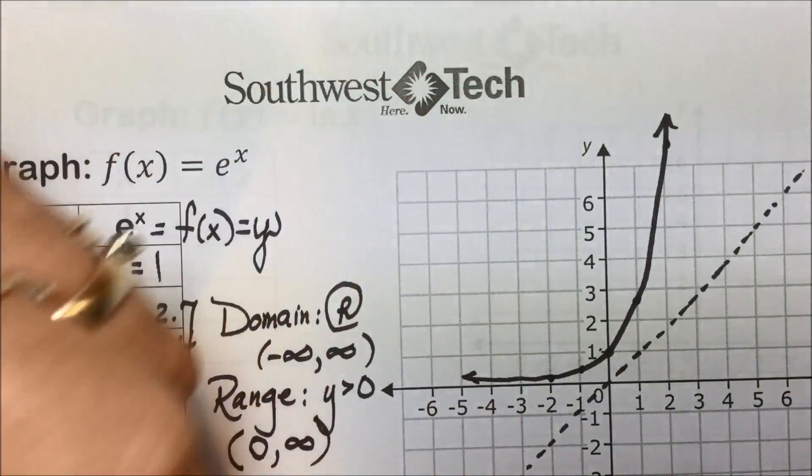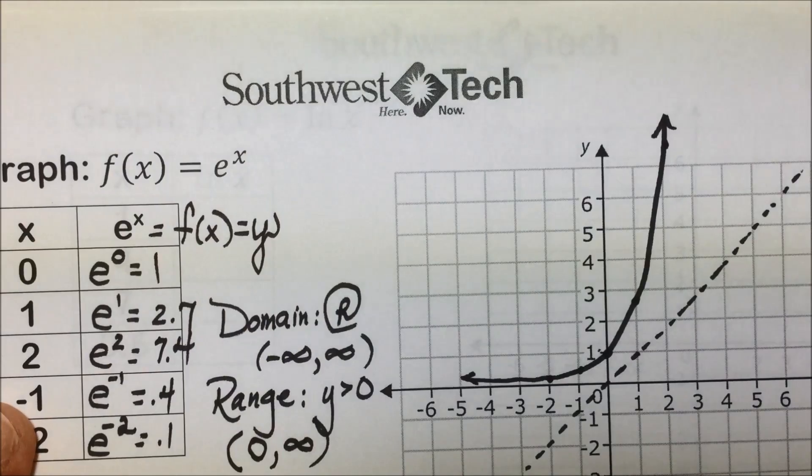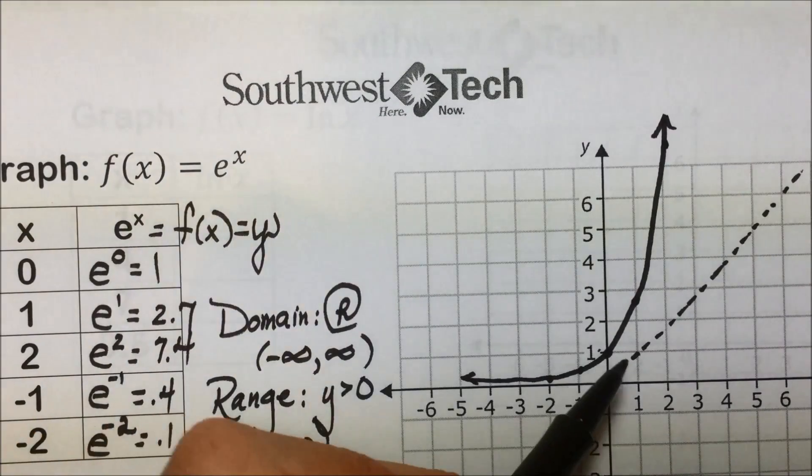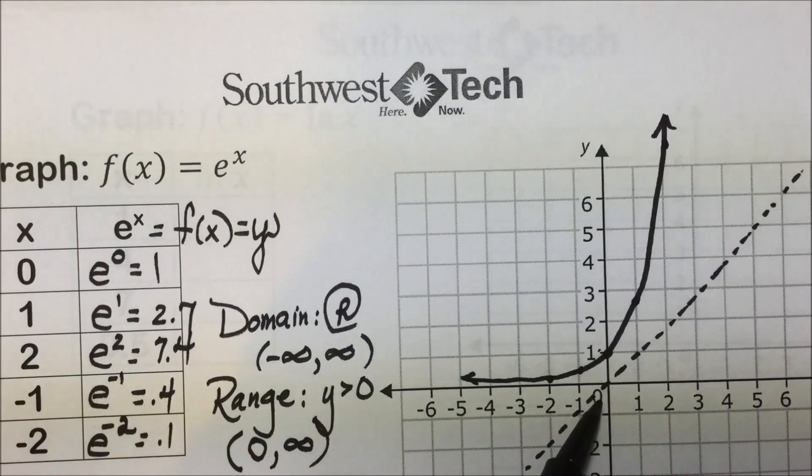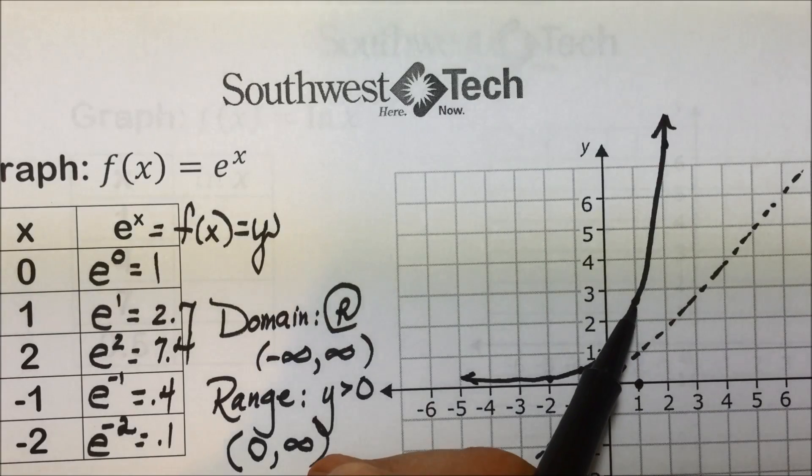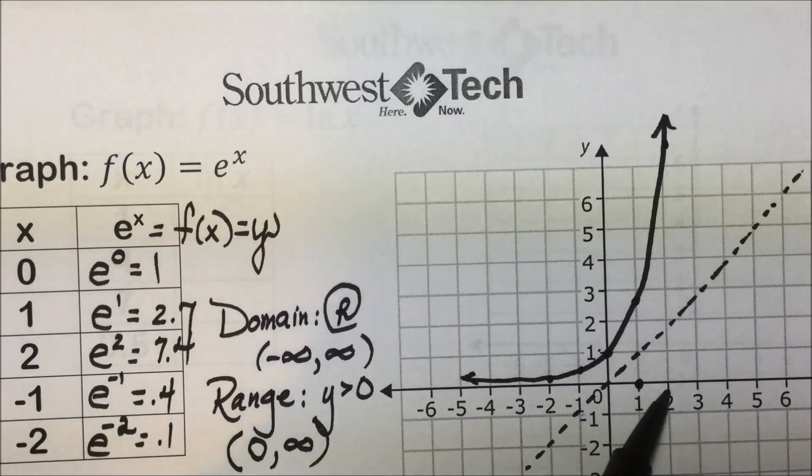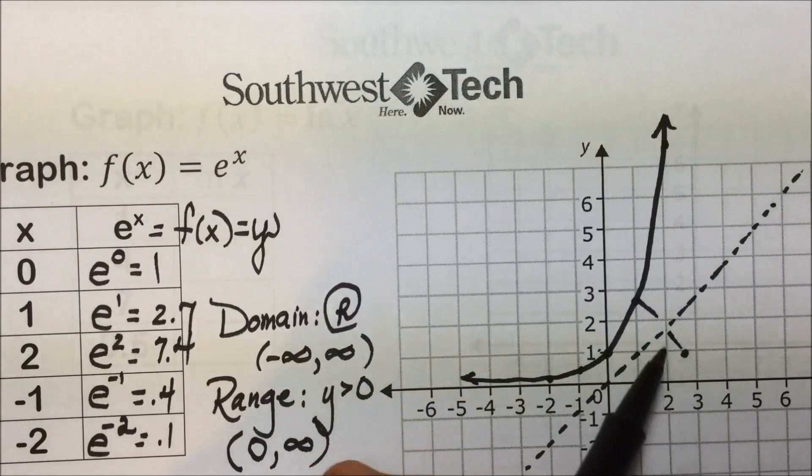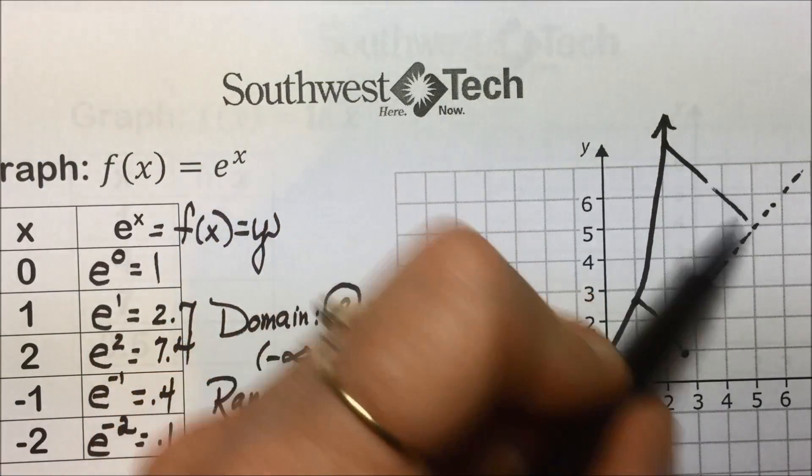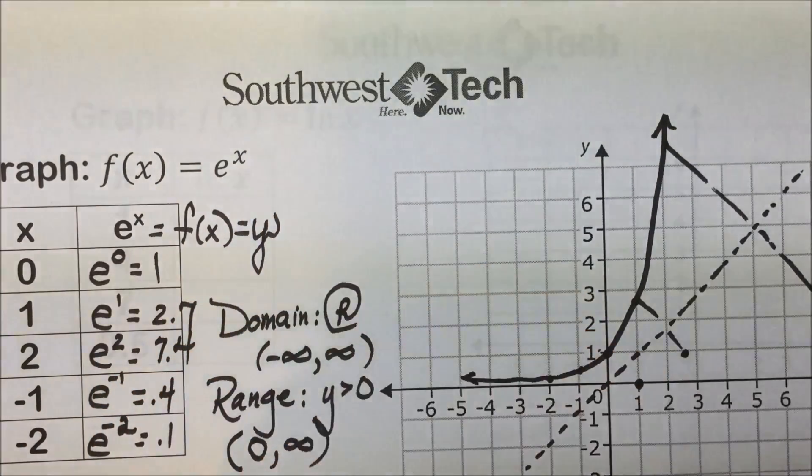So I've put in a dash line for y equals x, and here we have the point 0, 1. The inverse would be 1, 0. This point was 1, 2.7, so at 2.7, 1, we should find a point with these points being reflected. Here we have this point. We would reflect at that same distance, likewise these points.